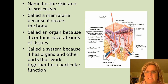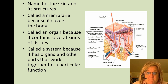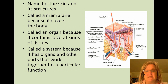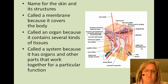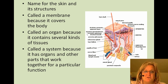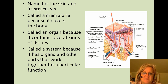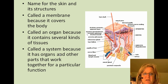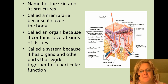The integumentary system is another name for the skin and its structures. The integument or the skin is called a membrane because it covers the body, like a membrane covers an organ. But it's also called an organ because it contains several different kinds of tissues. Remember, cells form tissues, tissues form organs, and organs form systems. It's called a membrane because it covers the body, an organ because it contains several different types of tissues, and a system because it has organs and other parts that work together to serve a particular function.